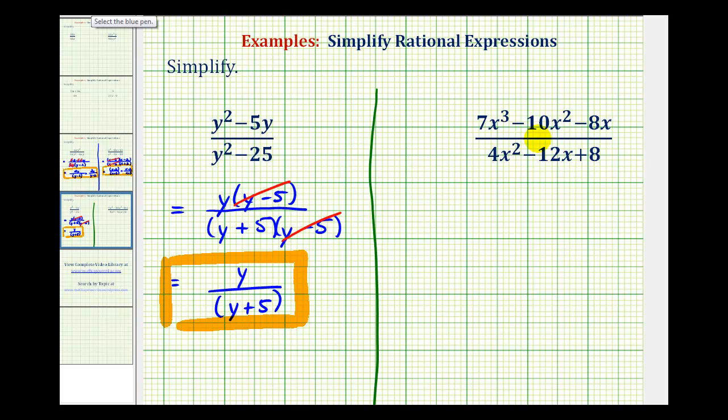Our second example does look a little bit more involved, but remember the first step is to factor out the greatest common factor. Looking at the numerator, notice how each term does share a factor of x. We'll start by factoring out an x from the numerator, giving us x times the quantity 7x squared minus 10x minus 8.